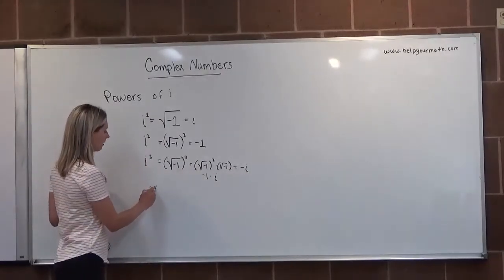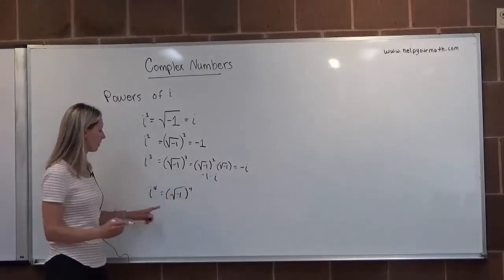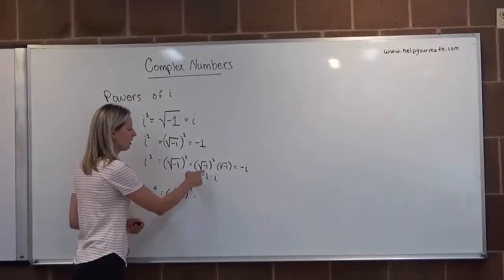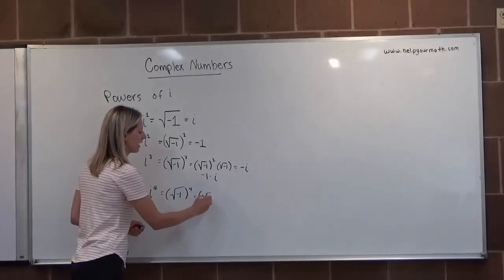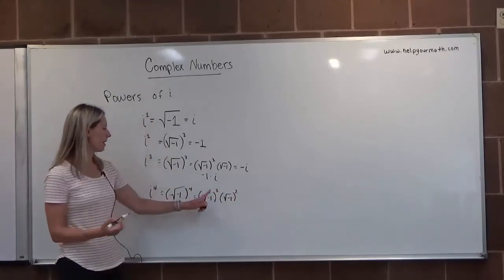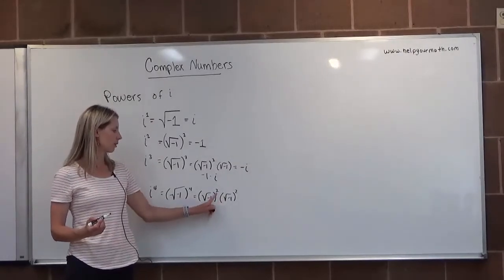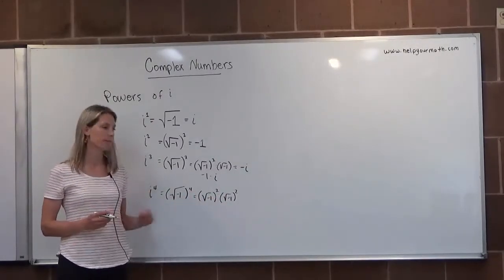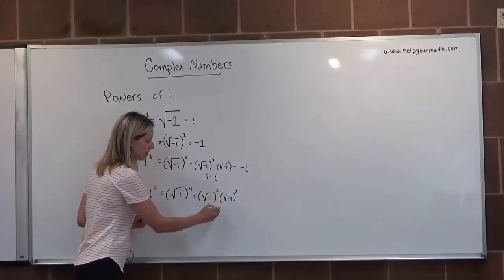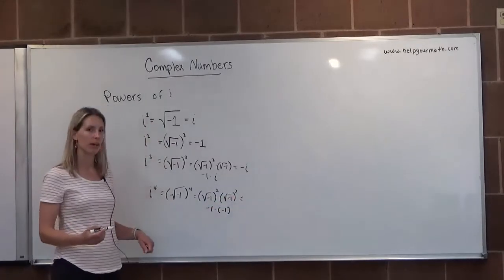And lastly, i to the fourth — that's like the square root of negative 1 to the fourth. What I might do is rewrite two of these: the square root of negative 1 squared times the square root of negative 1 squared. If we use the multiplication property of exponents and multiply these back together, we would add the exponents, getting us back to 4. We know the square root of negative 1 squared is negative 1, and negative 1 times negative 1 is 1.